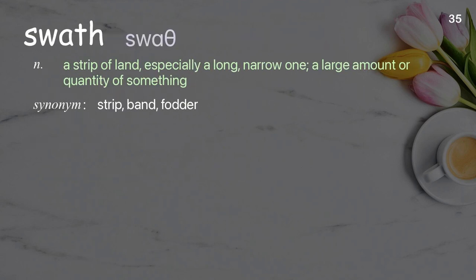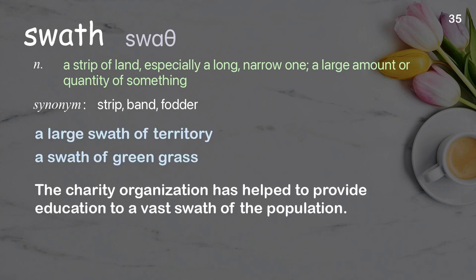Swath: A strip of land, especially a long, narrow one; a large amount or quantity of something. Examples: A large swath of territory, a swath of green grass. The charity organization has helped to provide education to a vast swath of the population.